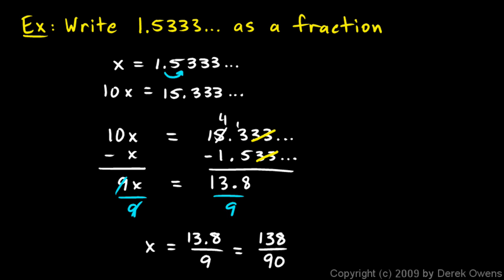And 138 over 90 can be simplified a little bit. Both of those are even numbers, so I'll divide them both by 2. Actually, both of those are divisible by 3. So let's do that. 138 divided by 3 is equal to 46, and 90 down here divided by 3 is equal to 30. And that can be reduced again.